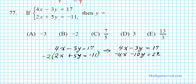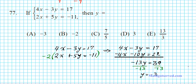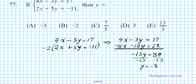We add the equations together. The x terms cancel, and we get negative 13y equals positive 39. Dividing both sides by negative 13, our answer is y equals negative 3. Y equals negative 3 is our result, and option letter A is the solution.